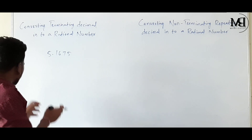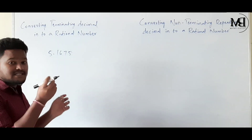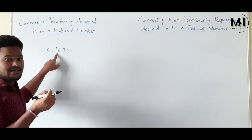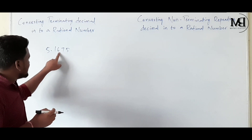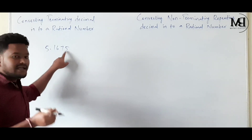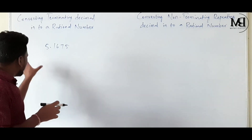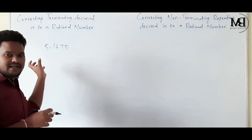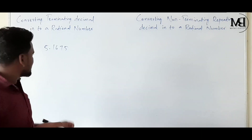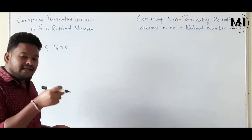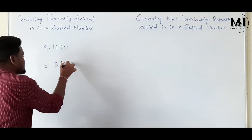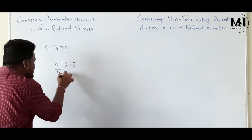If we observe the place values of 5.1675: 5 is in the 1's place, 1 is in the 10th place, 6 is in the 100th place, 7 is in the 1000th place, and 5 is in the 10,000th place. So if we read this decimal, it is 51,675 ten-thousandths. This can be written as 51,675 divided by 10,000.